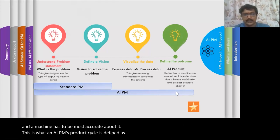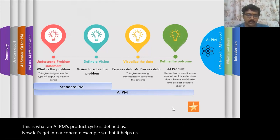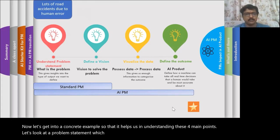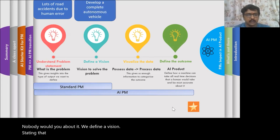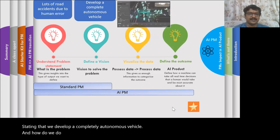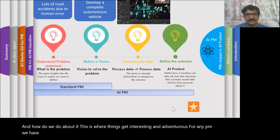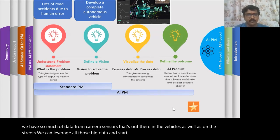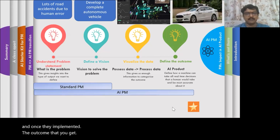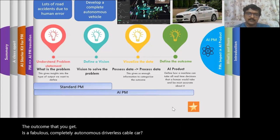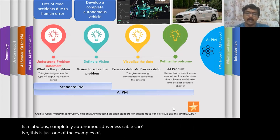Let's get into a concrete example to help understand these four main points better. The problem statement: lots of road accidents happen due to human errors. What do we do about it? We define a vision stating that we develop a completely autonomous vehicle. This is where things get interesting and adventurous for an AI PM. We have so much data from camera sensors in vehicles as well as on the streets. We can leverage all that big data, visualize it, and start defining the outcomes. When you give all of these as feature requests for the development team and they implement it, the outcome you get is a fabulous, completely autonomous driverless capable car. This is just one example of an AI product and how an AI PM looks at it.